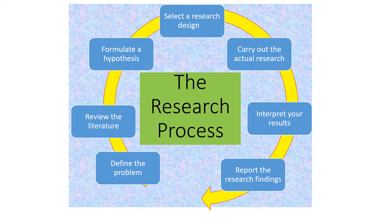Then you want to select a research design. A research design is simply taking a look at the type of research you want to do — how you plan to conduct your research. Are you going to do interviews? Are you going to do surveys? Who are you going to interview? Are you going to interview people randomly? Is there going to be a specific method to how you choose your interviewees? Are you going to be doing historical research? This is where you do all the planning. I would like to see this stage as a map — the map tends to show you where you are, where you're going, and how you're going to get there.